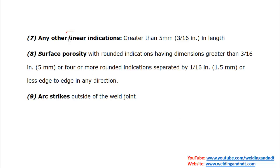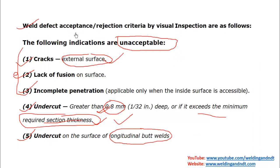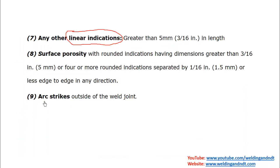Any other linear indications — other than cracks, lack of fusion, incomplete penetration, undercut, and reinforcement — greater than 5 mm will be rejected. A linear indication is one where the length is more than 3 times the width. A rounded indication is one where the length is less than or equal to 3 times the width; circular or elliptical shapes are considered rounded indications.